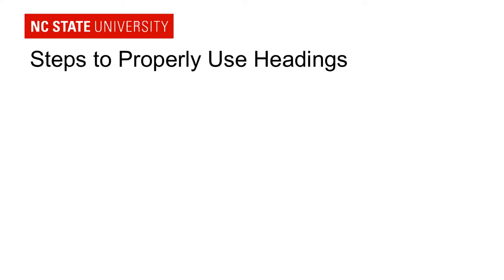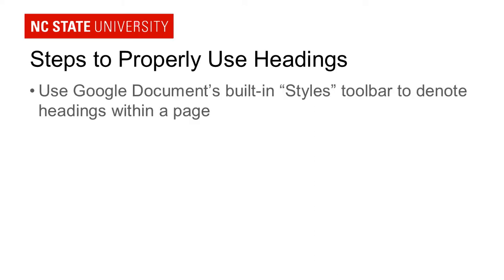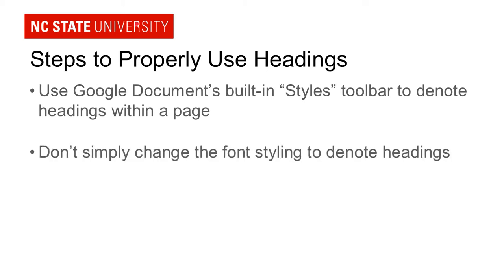So what are the steps to properly use headings in Google Documents? First, use Google Documents' built-in styles toolbar to denote headings within a page. Don't simply change the font styling to denote headings by making something bigger or bolder. When you actually go to the Style menu and choose a bit of text as a Heading 1 or Heading 2, what you're doing is changing the code underneath the page to actually say this is a heading, not just this is something bigger and bolder. That's the piece that needs to happen in order for assistive technologies like screen readers to take advantage of that feature.